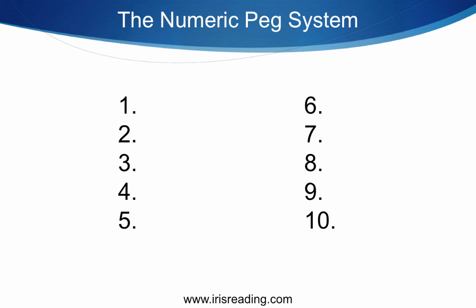Why? Because the human brain is very horrible at remembering abstract information like numbers. We're actually very good at remembering visuals.